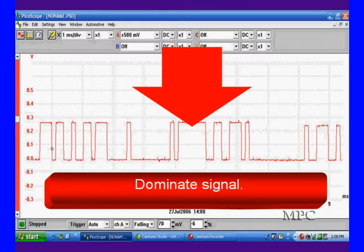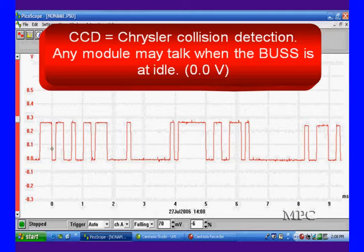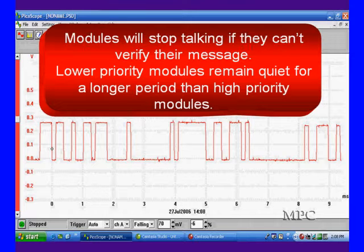We talked about a lot of modules talking. CCD, collision detection. Any module can talk when the bus is idle. When it sees zero volts, any modules. Modules will stop talking if they can't verify the message. Low-priority modules remain quiet for a longer period than high-priority modules, and that's how it shares things, and we could show you how they do that if it was really important.